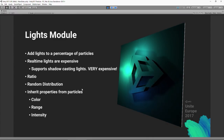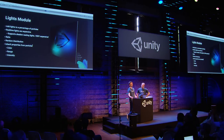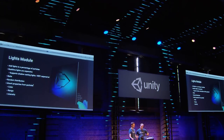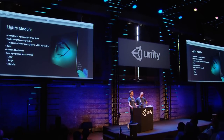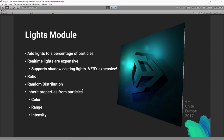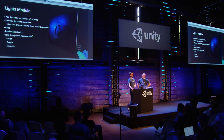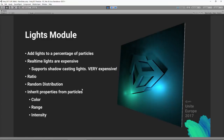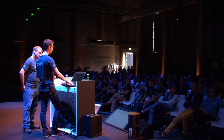Also in 5.5 is the Lights module — something you could achieve with script, but now natively built in for efficiency. Options include inheriting colors and intensities from particles. You can add lights to only a percentage of particles since lights are expensive. If you're adding many lights, Deferred rendering is the best choice as Forward isn't great with lots of lights. Shadow casting lights are supported but get very expensive very quickly.